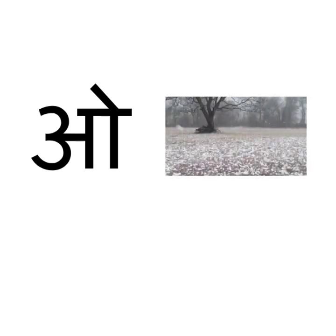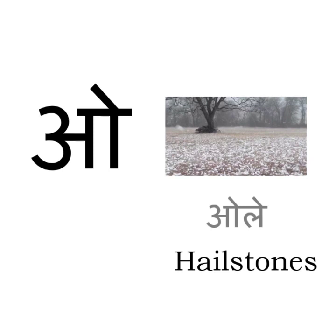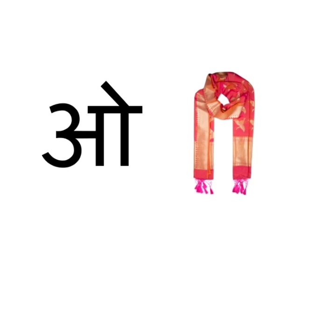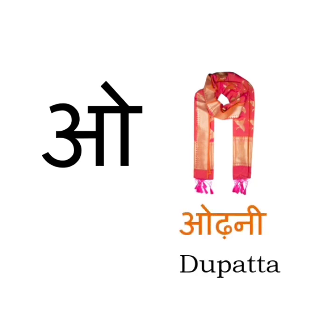O se ole. Ole means hailstones. It is a small hard ball of ice that falls from the sky like rain. O se odni. Odni means dupatta, which all girls like to take when they wear Punjabi suits.